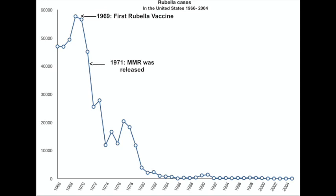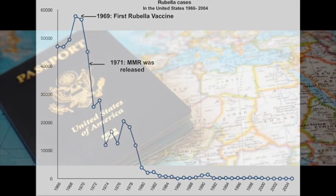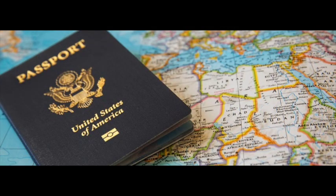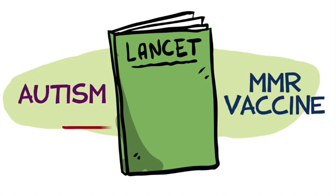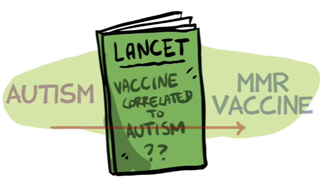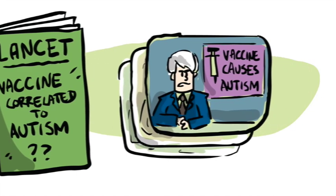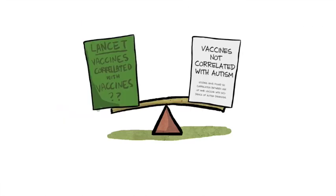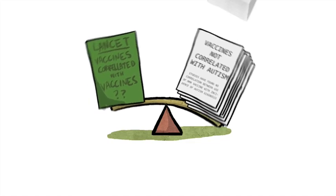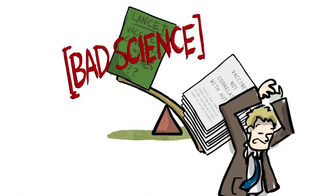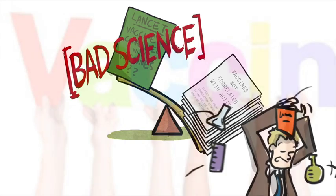However, cases can still occur when an unvaccinated individual is exposed to an infected person. This happens most often during international travel. In 1998, a paper in a major medical journal proposed a link between autism and the vaccination for measles, mumps, and rubella. The popular press and some celebrities fueled anxiety about vaccinations based on this report. Over a dozen studies have failed to find any connection between autism and vaccines, and that original paper was retracted amid allegations of fraud and conflicts of interest.